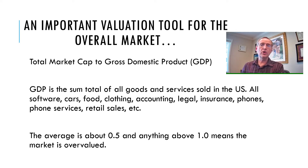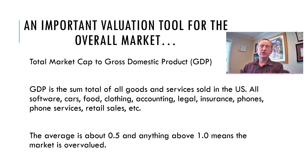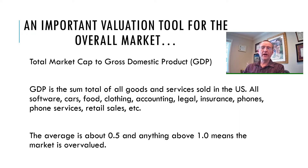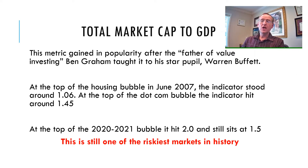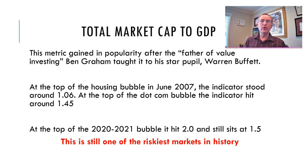One of the things we want to look at is the total market cap to the gross domestic product. The GDP is the sum total of all goods and services sold in the United States, which includes software, cars, food, retail sales, accounting, legal, and any kind of product or service — even haircuts. Typically, when you have the total market cap over the GDP, it generally ranges in the 0.5 to 1 area. Anything above 1 is going to be overvalued. This metric — the market cap to GDP — gained a lot of popularity from the father of investing, Ben Graham, who taught it to his star pupil, Warren Buffett.